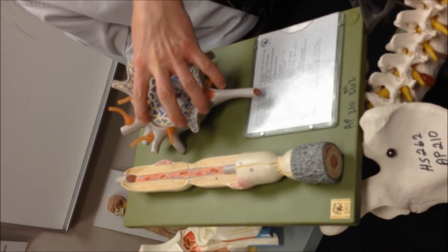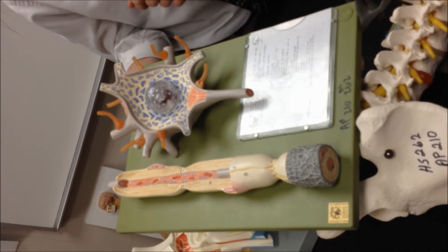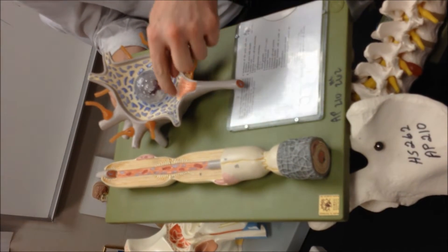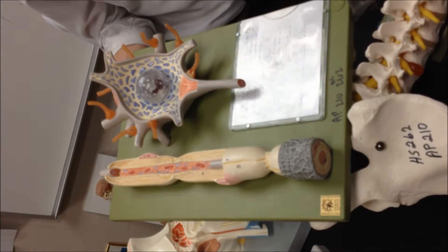All right, so the neuron cell body, you've got the nucleus, all the little blue spots in here are the Nissl bodies, the little black lines here are the neurofibrils.